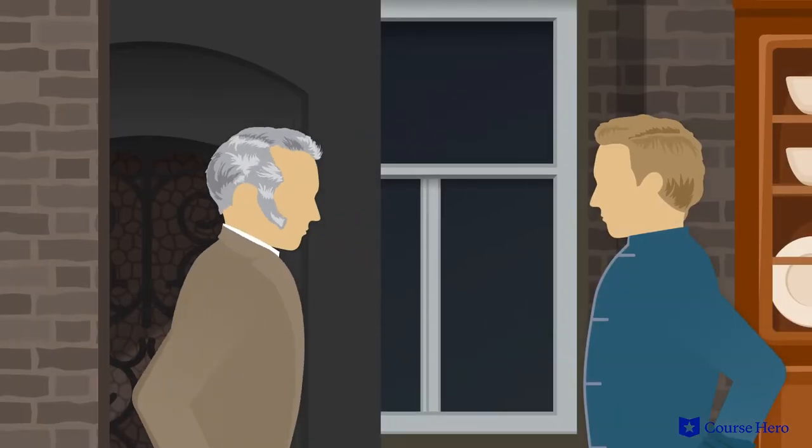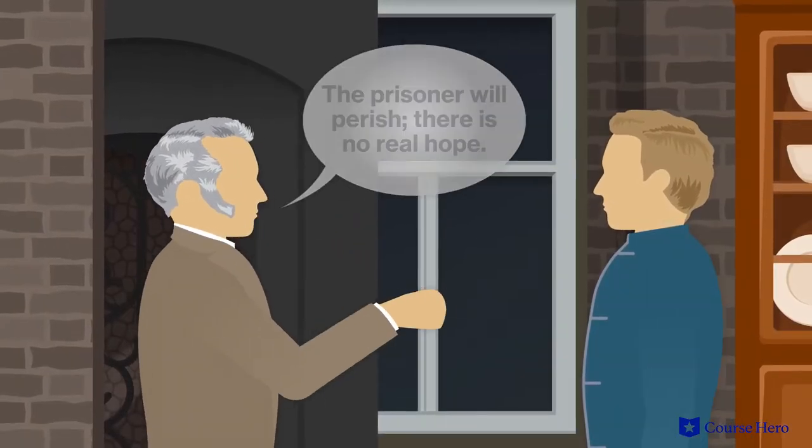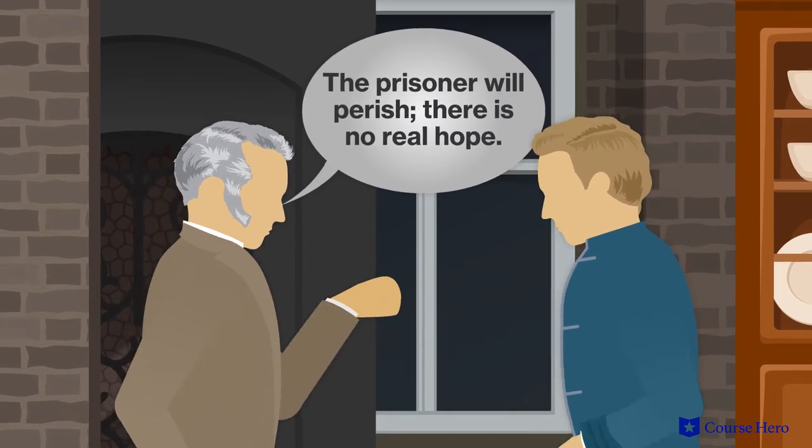Then he asks Dr. Manette to use his influence again to try to save Darnay but recognizes that it is probably futile. As Carton is leaving, Lori whispers to him that the prisoner will perish. There is no real hope.